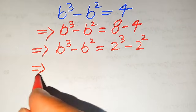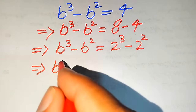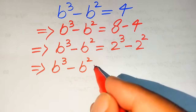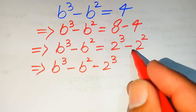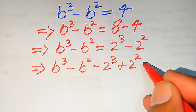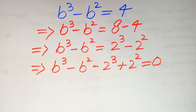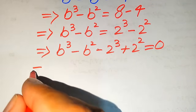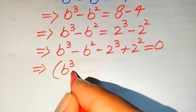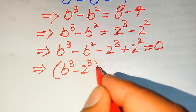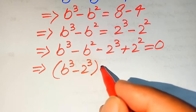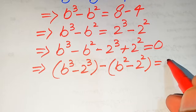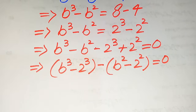In the next step we move these two terms from the right hand side to the left hand side. It will be written as b cubed minus b squared, and plus 2 cubed becomes minus 2 cubed, and minus 2 squared becomes plus 2 squared, and this whole equation equals 0. We then pair the cubic terms together and the square terms together, giving b cubed minus 2 cubed, minus b squared minus 2 squared, equals 0.